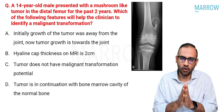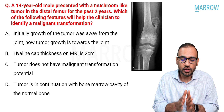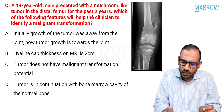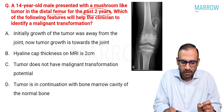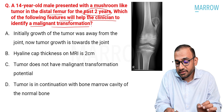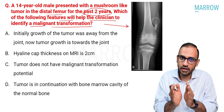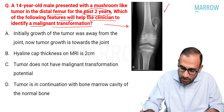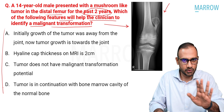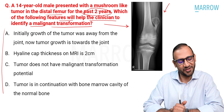That was straightforward — all you had to do was revise your nerve injuries. Moving on to the next question: a 14-year-old male presented with a mushroom-like tumor in the distal femur for the past two years. Which of the following features will help the clinician identify malignant transformation? An X-ray is given — this is a spotter-based question, so you need to make the diagnosis from the image before your theoretical knowledge becomes useful.